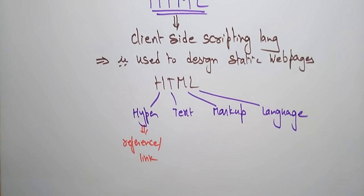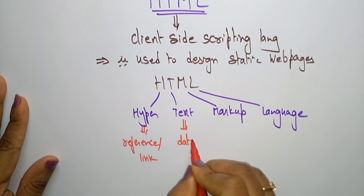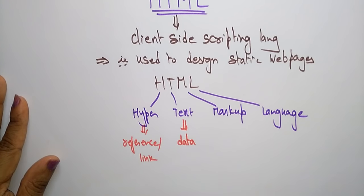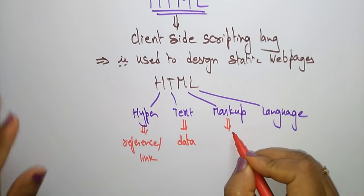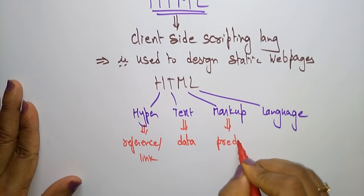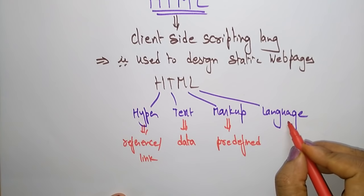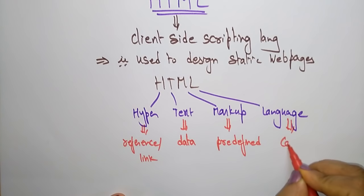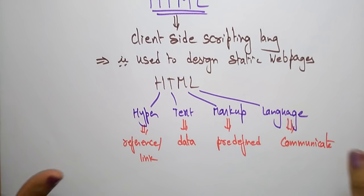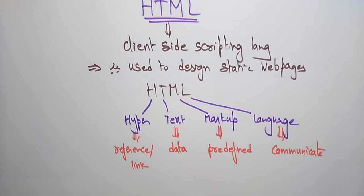Text is nothing but the data or information — whatever data you want to be displayed, that information is represented in the form of text. Markup is nothing but predefined terms — predefined statements that are present in this HTML language. And Language is used for communication; if you want to communicate, you need some language.